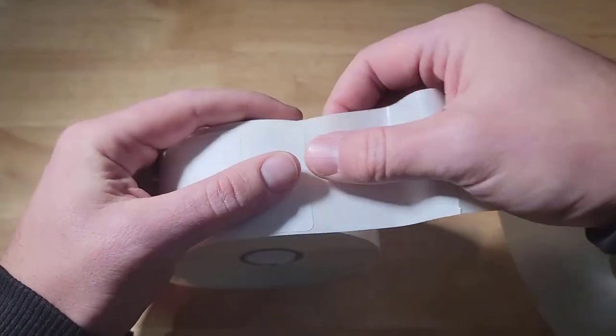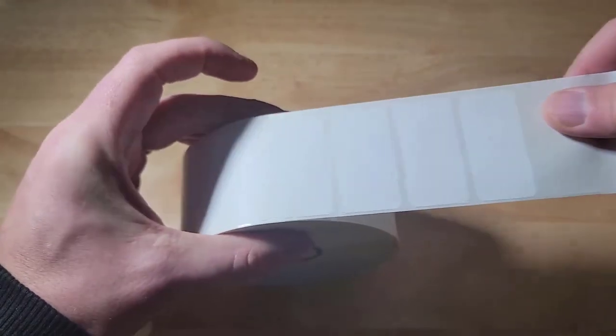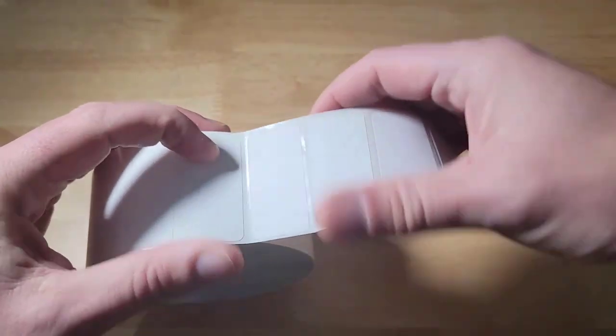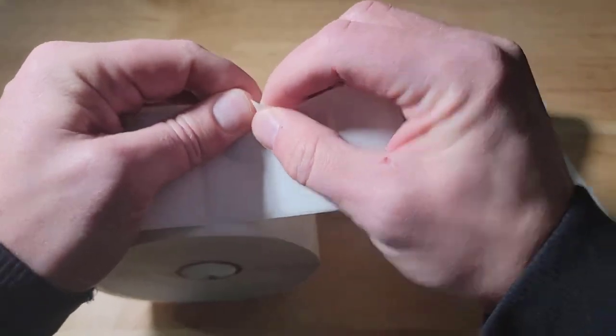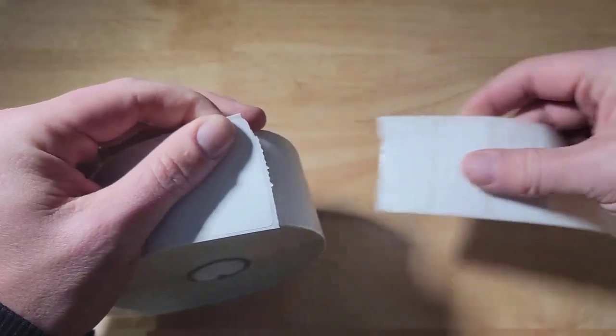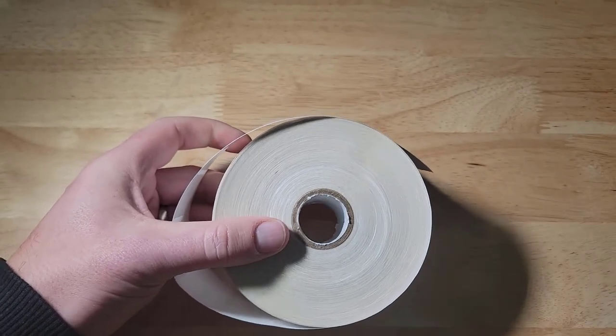So this is perforated, they come out of your machine and you can just go ahead and rip them like this because they are perforated, and it makes it really simple, really easy.